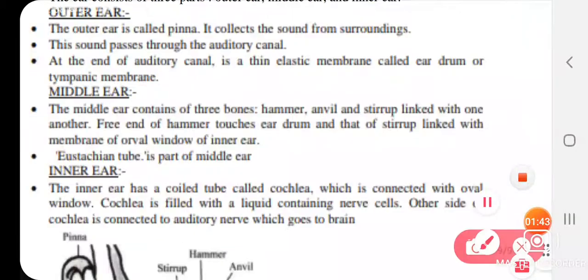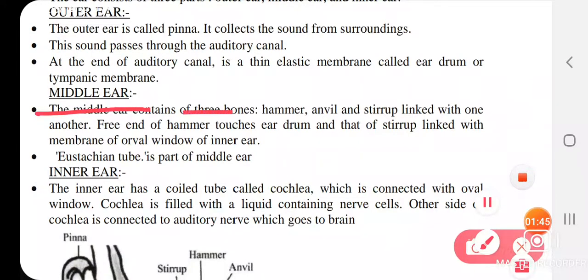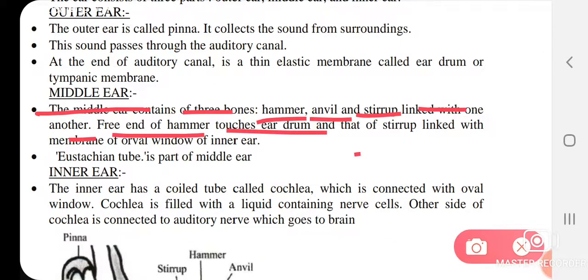The middle ear contains three bones: hammer, anvil, and stirrup, linked with one another. The free end of hammer touches the ear drum, and that of stirrup is linked with the membrane of oval window of inner ear.